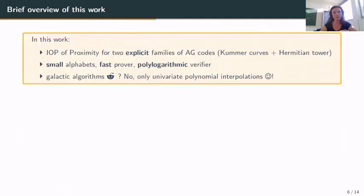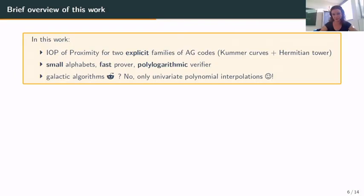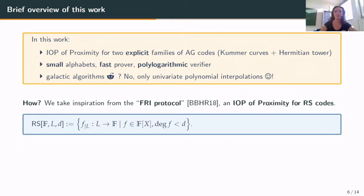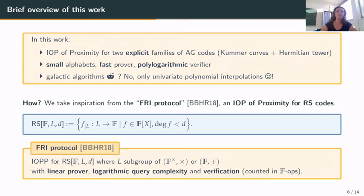Now we have defined all the notions. What do we do in this work? We provide an interactive oracle proof of proximity for two explicit families of AG codes: codes on Kummer curves and on the Hermitian tower. These have small alphabets, a fast prover, and a polylogarithmic verifier. And the algorithm is not galactic — we only perform univariate polynomial interpolations. We take inspiration from the FRI protocol, introduced by Ben-Sasson, Ories, and Rabziev in 2018, which is an IOPP for Reed-Solomon codes.